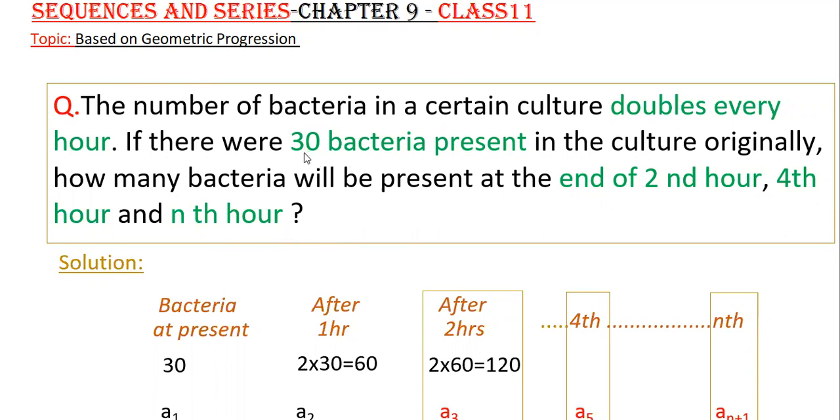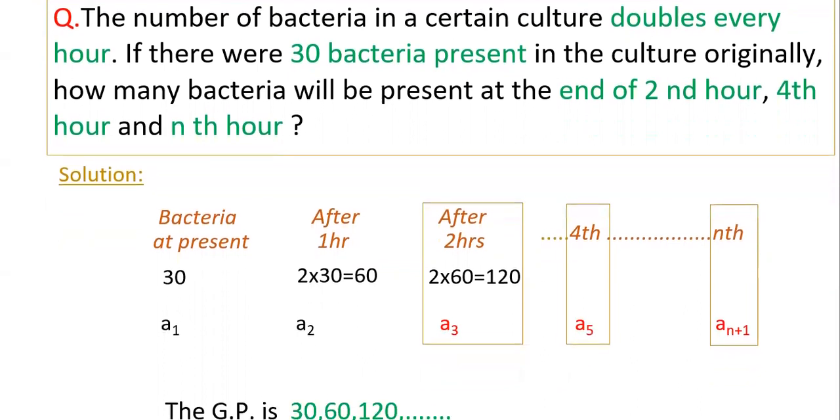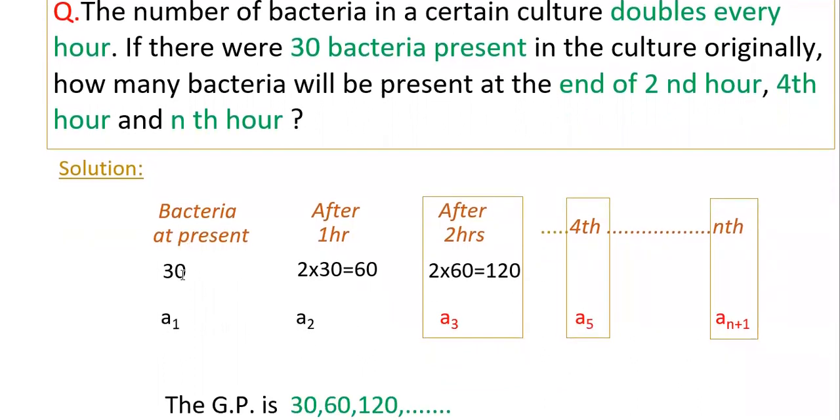Here the bacteria at present is 30 and it doubles every hour. This means first bacteria present is 30 and after one hour it doubles to 2 into 30 that is 60, and again after two hours it doubles to 2 into 60 that is 120.